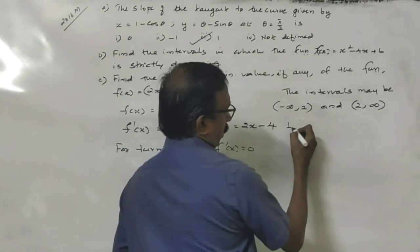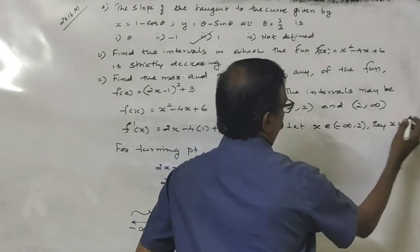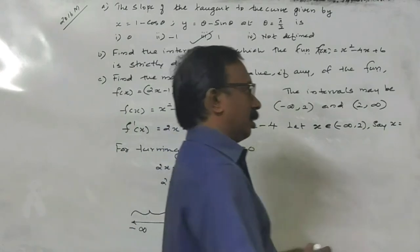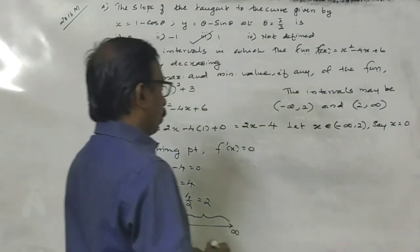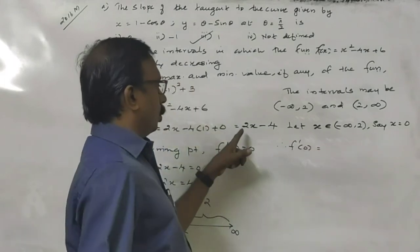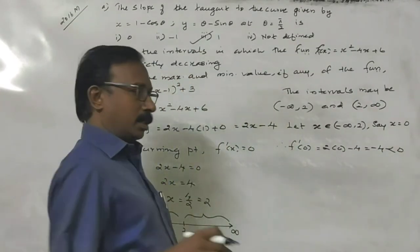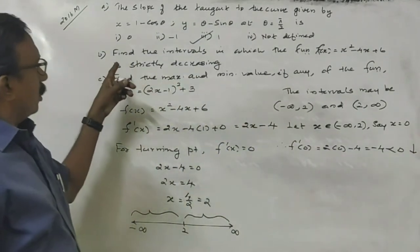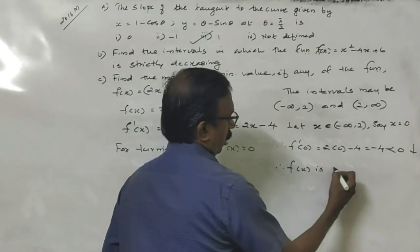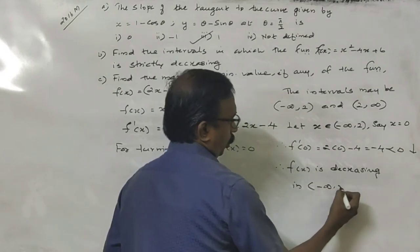Let x be an element of (minus infinity, 2). Let me take a value, say x equals 0. Put x equals 0 in f'(x). f'(0) equals 2 into 0 minus 4, that is minus 4, which is less than 0. Therefore, the function is decreasing. So f(x) is decreasing on (minus infinity, 2).